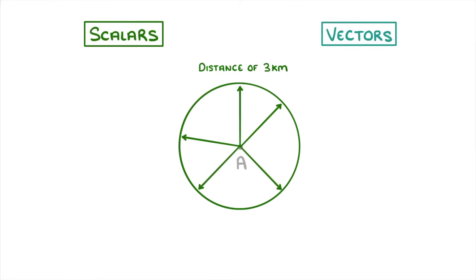This is because distance doesn't actually give us any idea of the direction, which is why it's a scalar quantity.